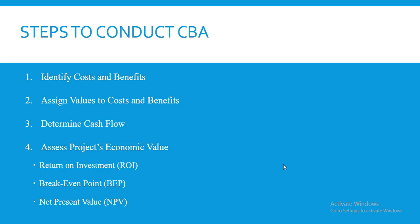Step three is to determine the cash flow. During the development stage you incurred an investment — a cost — but the benefits come as you use the system over a period of time. So we determine the cash out and the cash in, in order to see at what point we move from incurring costs to beginning to receive benefits.